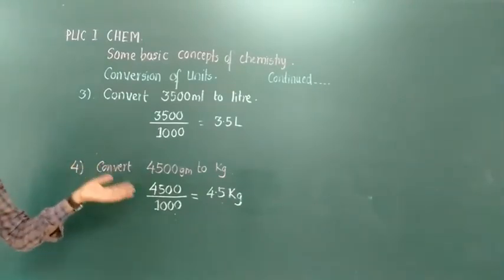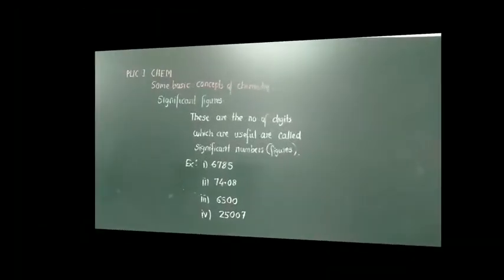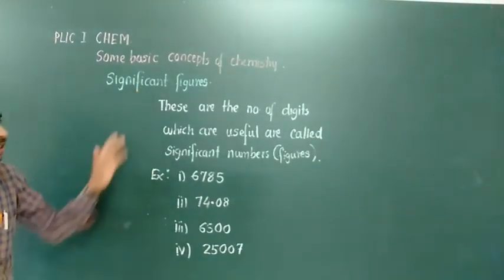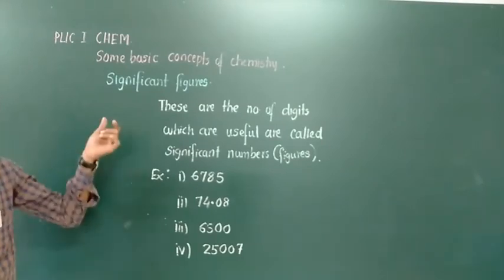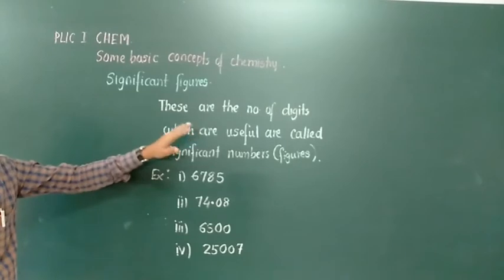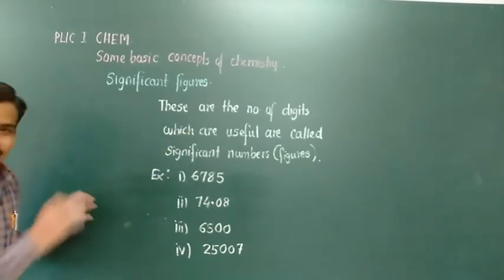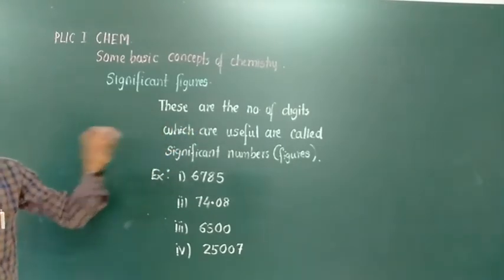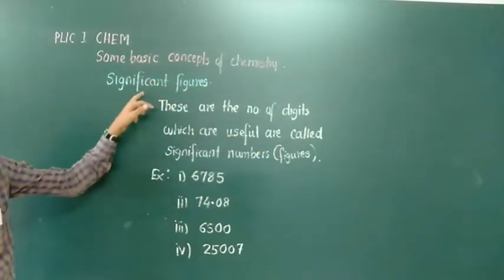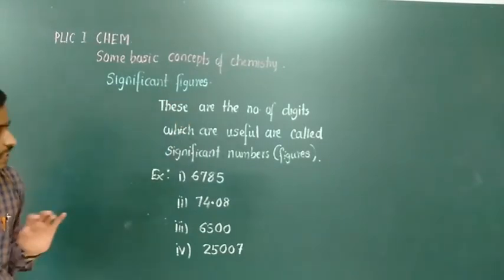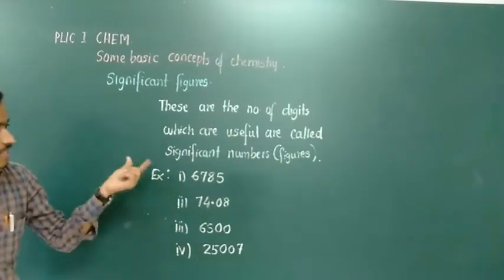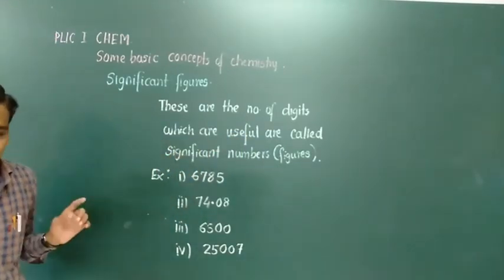Now continuing with the next topic: the concept of significant figures or significant numbers. You may have already learned this in high school. It is nothing but the number of useful digits present in a given number — the number of digits which are useful. Those are called significant numbers or significant figures.